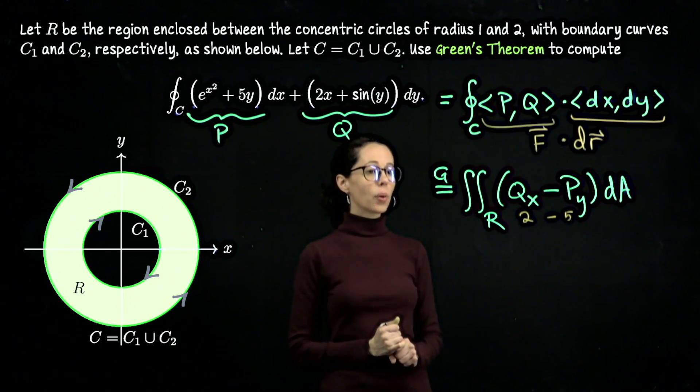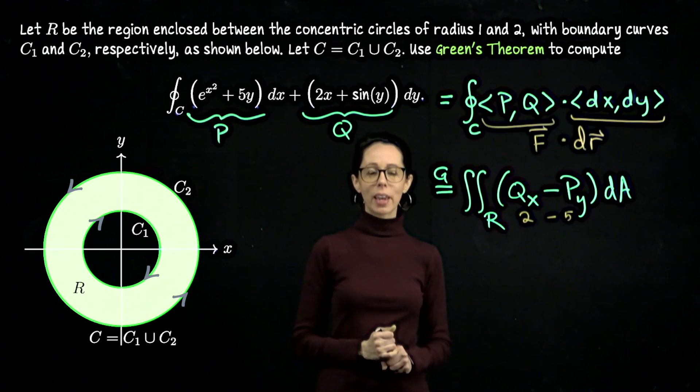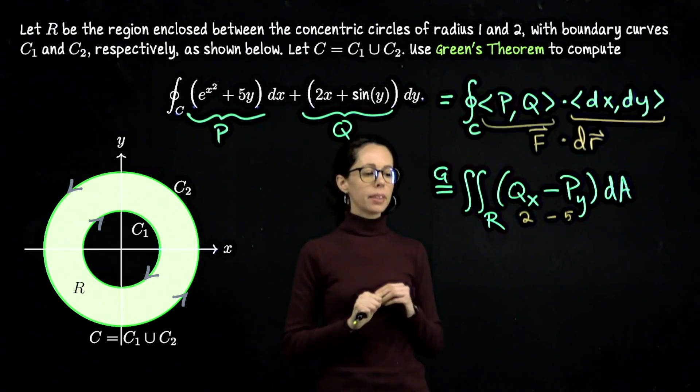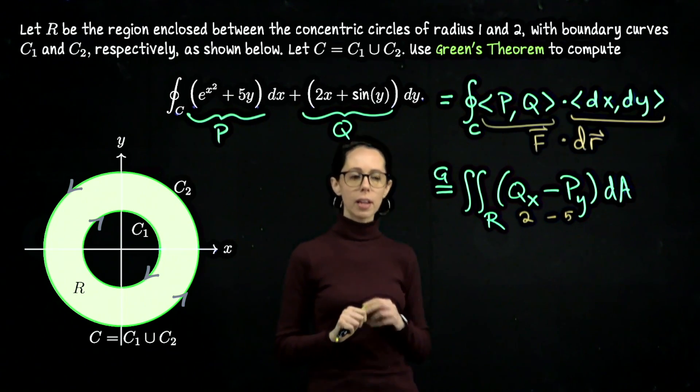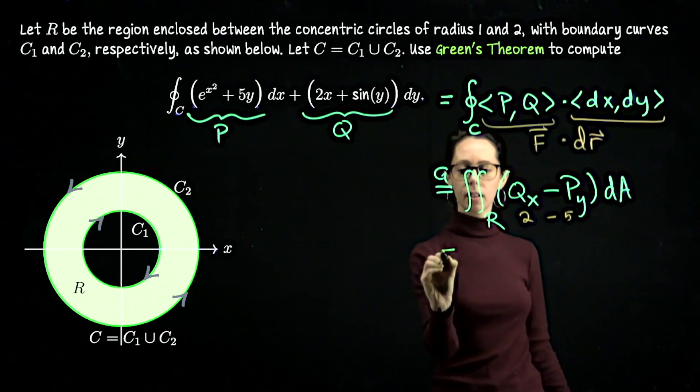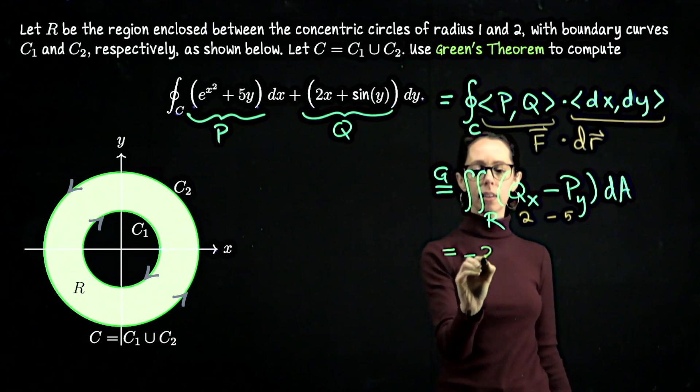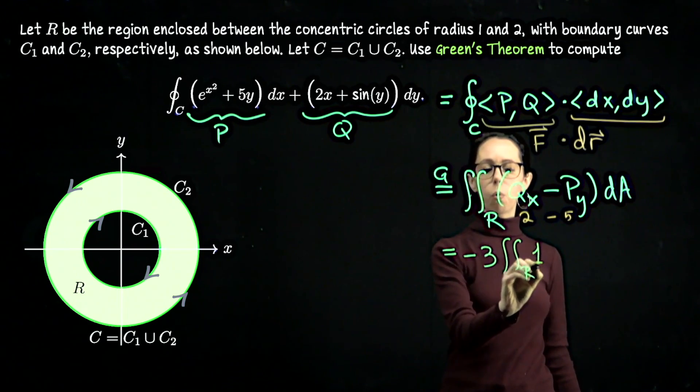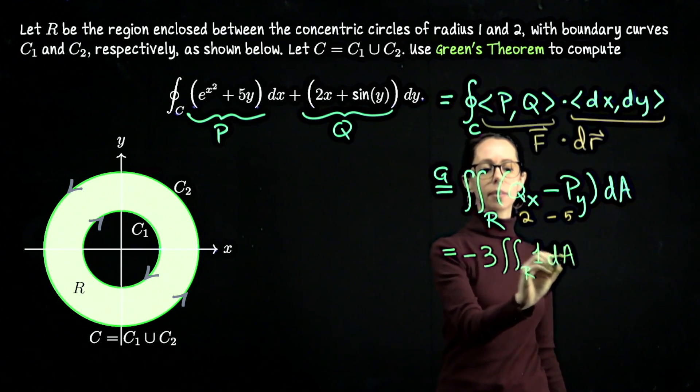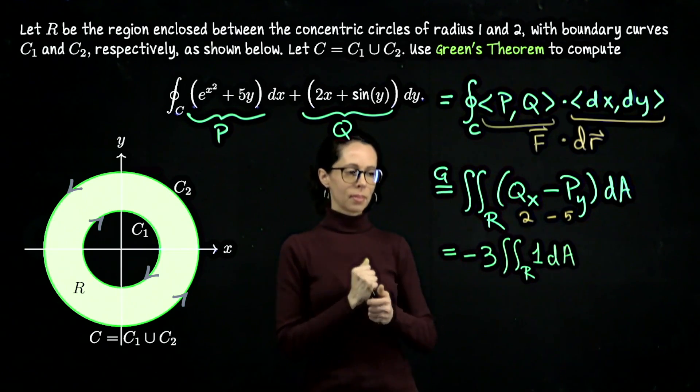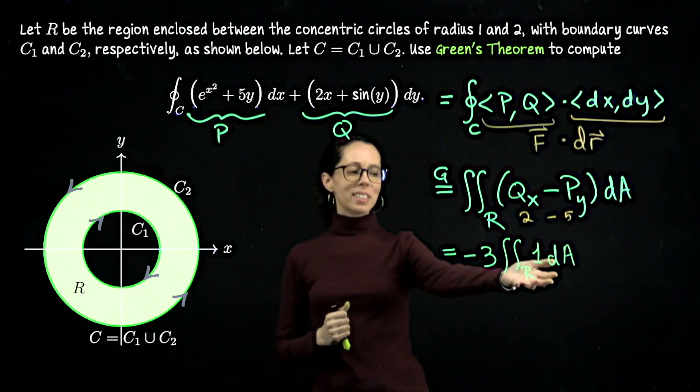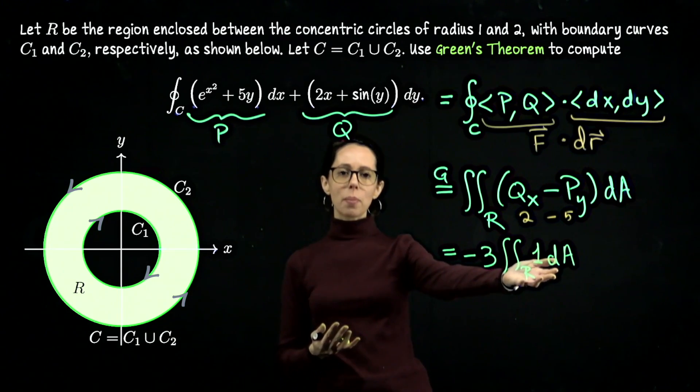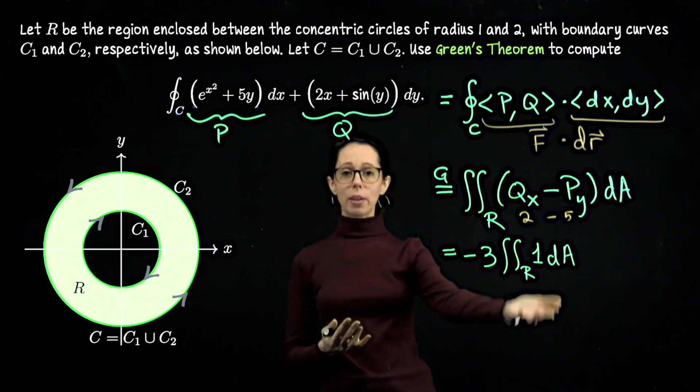So we are going to double integrate negative 3 over this region enclosed between these concentric circles. Let me, in the interest of space, go ahead and factor that negative 3 in front because it's just a constant. So we have negative 3 times the double integral over the region R, 1 dA. 1 dA is really just saying what's the area of R.